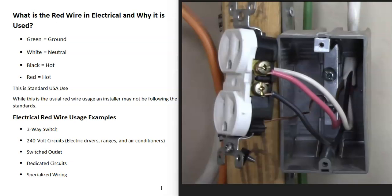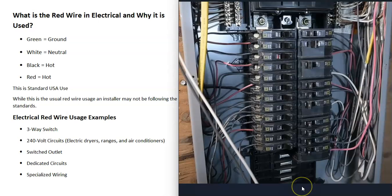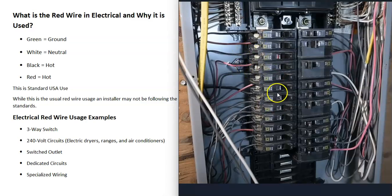The most common usage of the red wire is that it's going to be a hot wire. If you look at your electrical panel and the breakers, very likely all the red wires are going straight into the breakers, along with the black wires — both are hot wires. All the white wires and the ground wires are going to be tied together, but the black wires all have their own breaker, and it should be the same for the red wires.